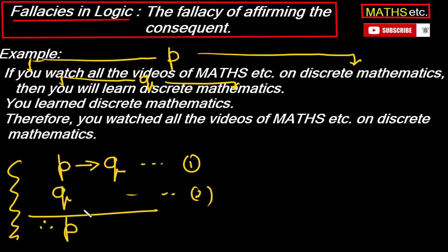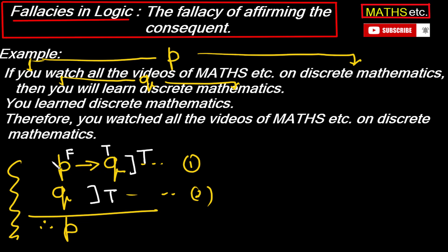Looking at this form, we might think this is a valid argument — meaning whenever both premises are true, the conclusion P would also be true. But we will see that this is not necessarily the case. Suppose premise 1 is true and premise 2 (Q) is true. In a conditional statement, if the antecedent is false and the consequent is true, the conditional statement is still true.